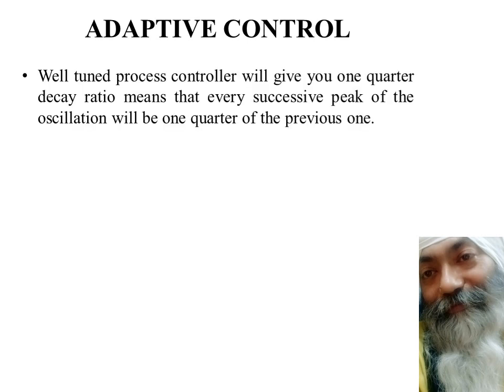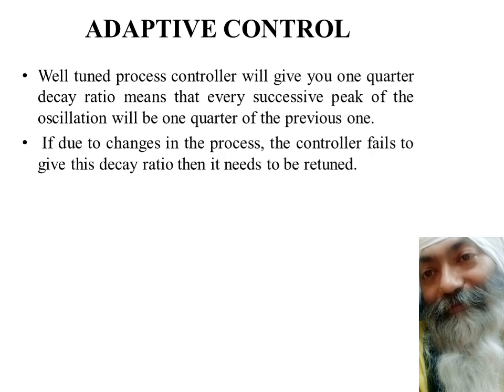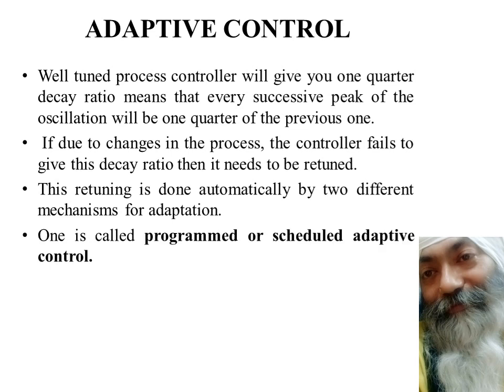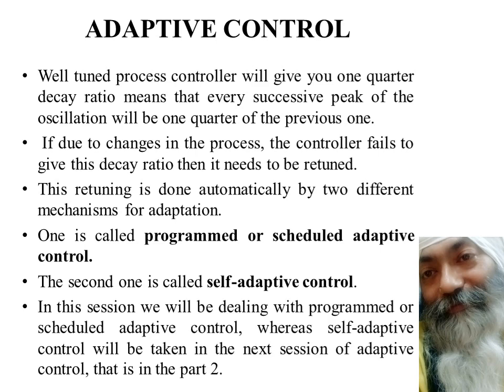If the controller deteriorates and no longer gives the one-quarter decay ratio, we need to retune it. This can be done in two ways: the first is called programmed or scheduled adaptive control, and the second is called self-adaptive control. In this session, we will deal with the first type — programmed or scheduled adaptive control.